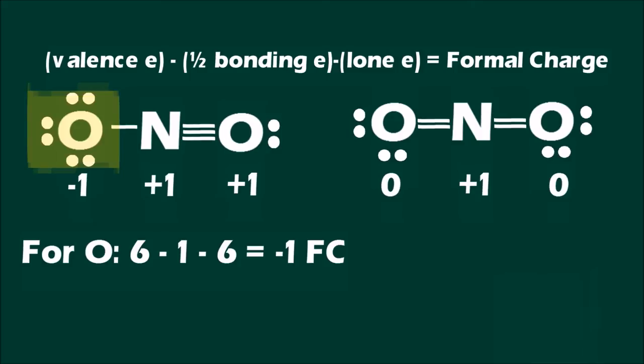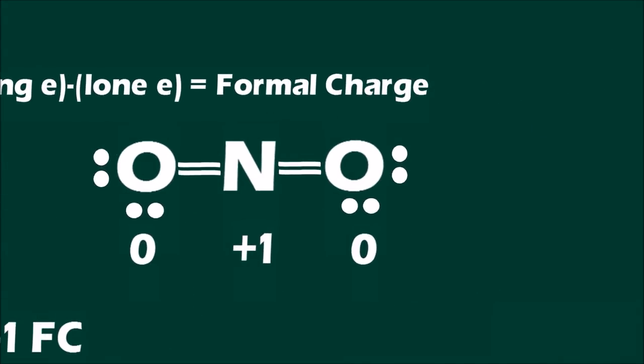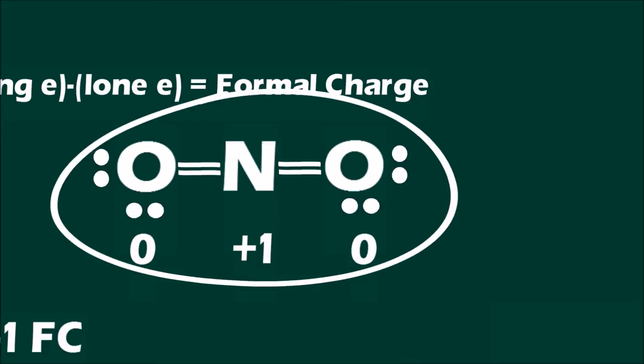The formal charges for the first nitronium structure are negative one on the singly bonded oxygen and positive one on both the nitrogen and the triply bonded oxygen. The second Lewis structure has formal charges of zero on both doubly bonded oxygens and positive one on the nitrogen. This lower formal charge makes the second Lewis structure the correct one.